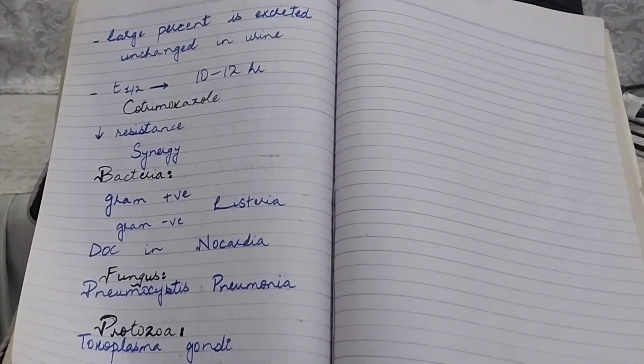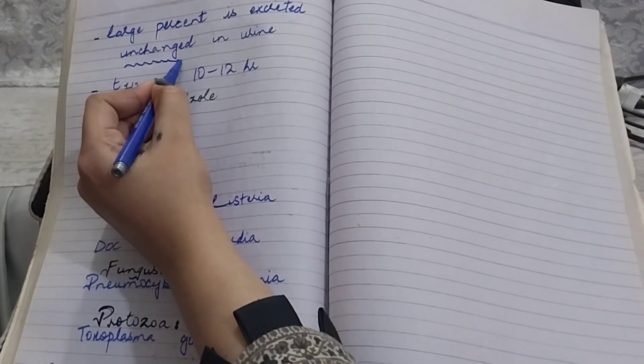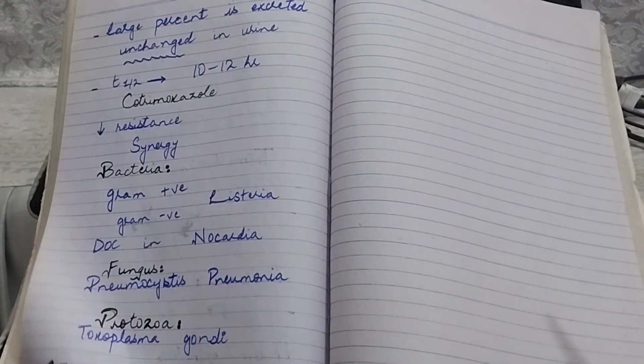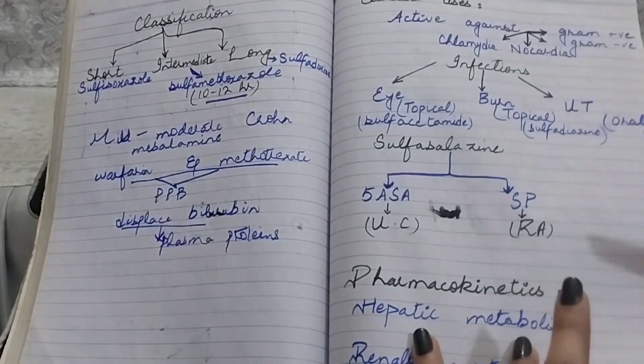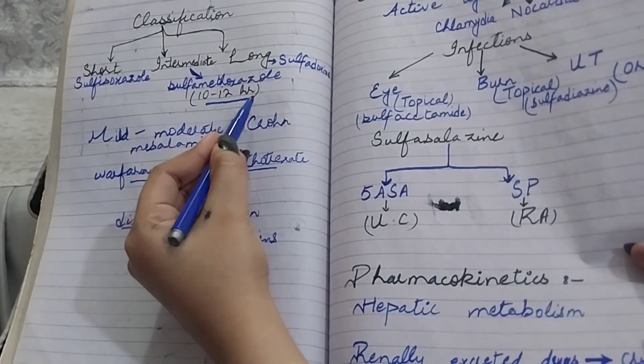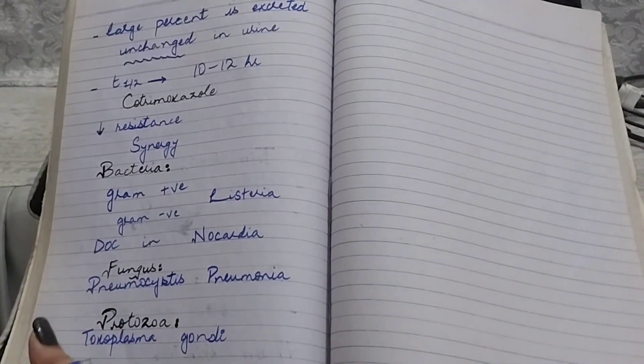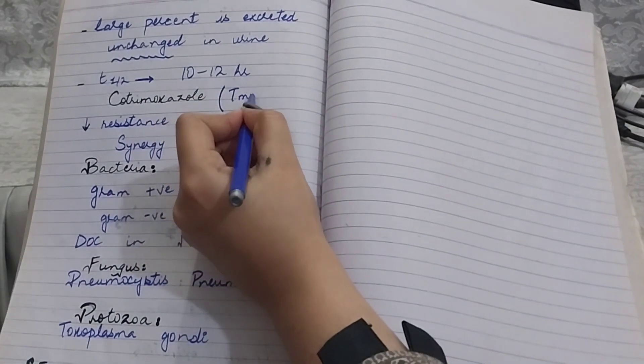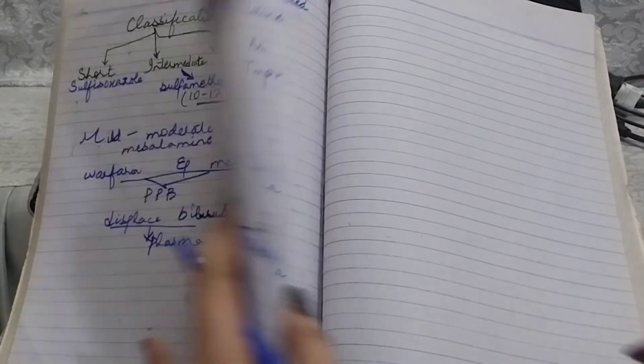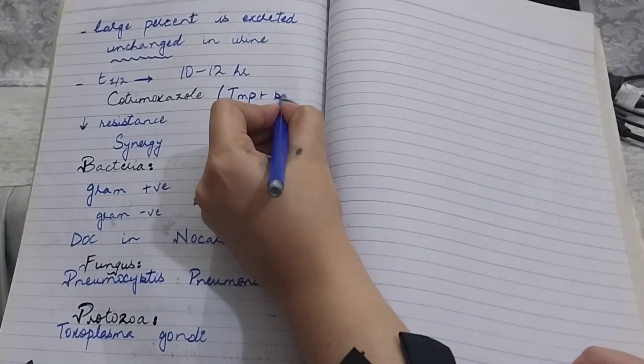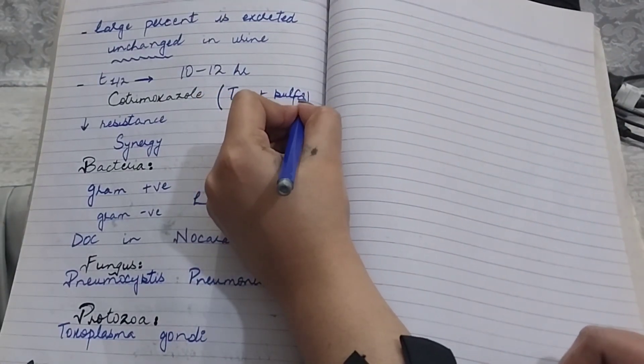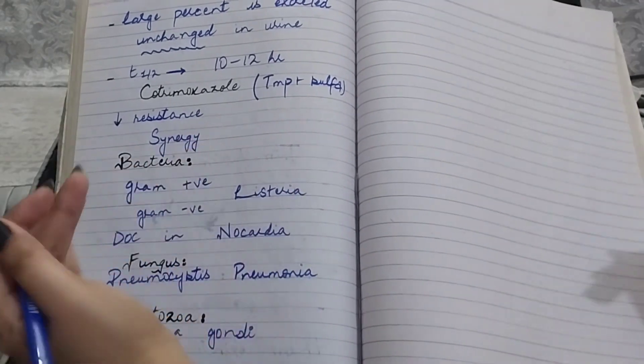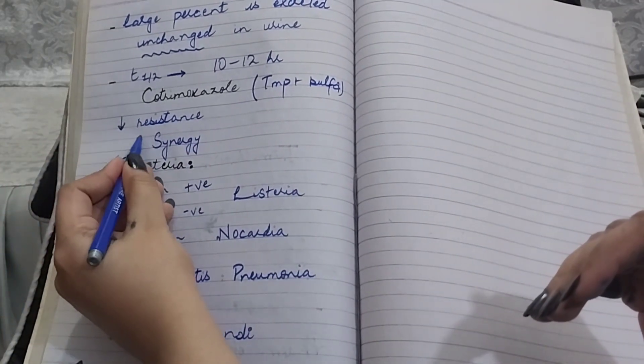Large percentage of trimethoprim is excreted unchanged in the urine. Half-life is 10 to 12 hours. Notice that the half-life of trimethoprim and sulfamethoxazole is the same. So we have cotrimoxazole, which is a combination of trimethoprim and sulfamethoxazole. This combination is also known as Bactrim. Because of this combination, they have low resistance and synergistic actions.